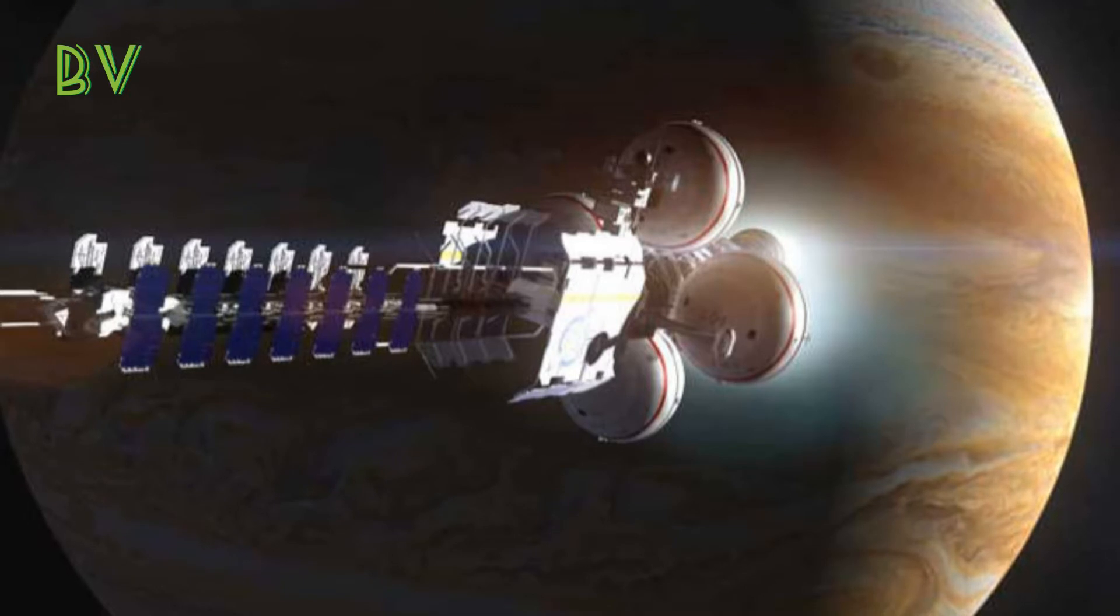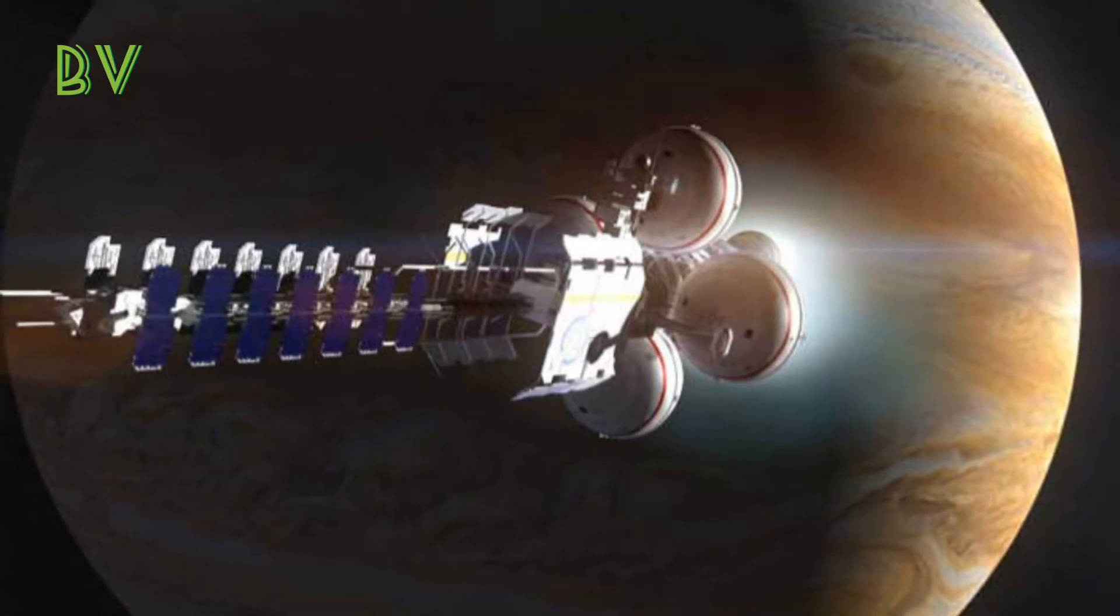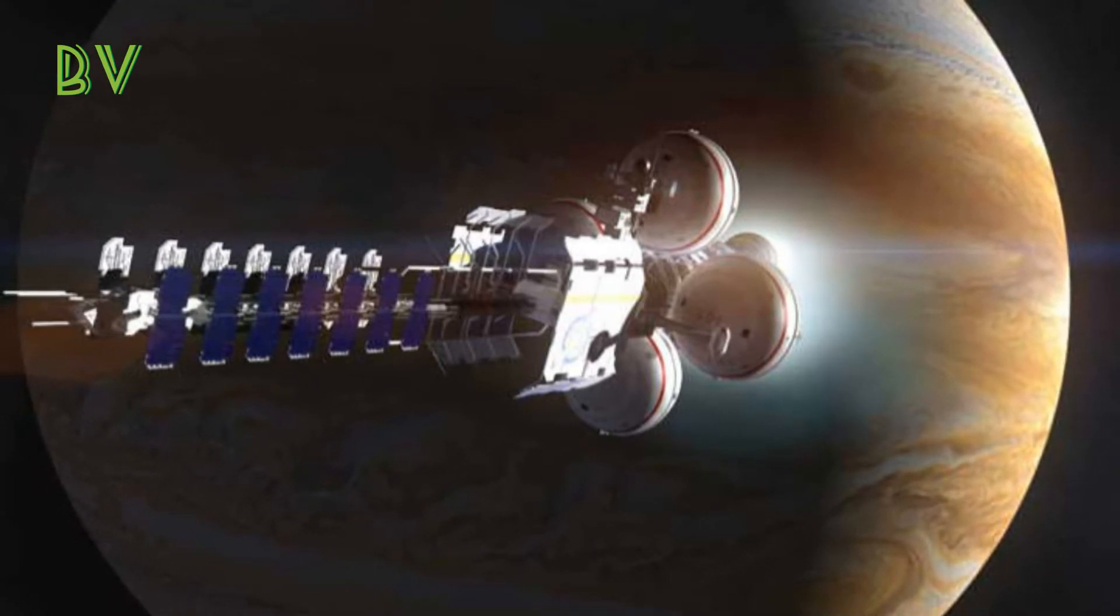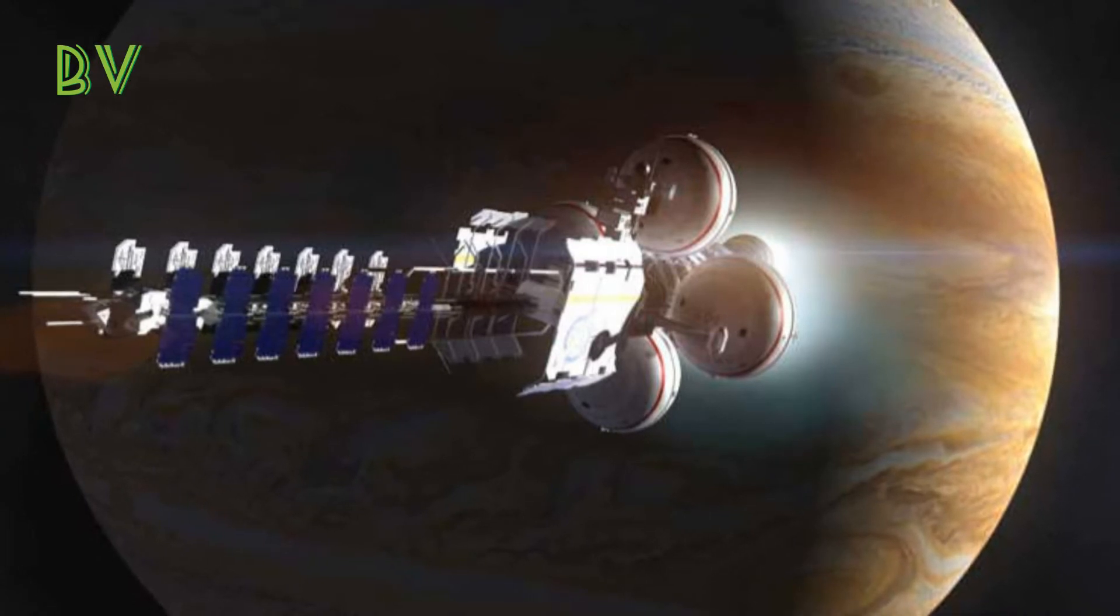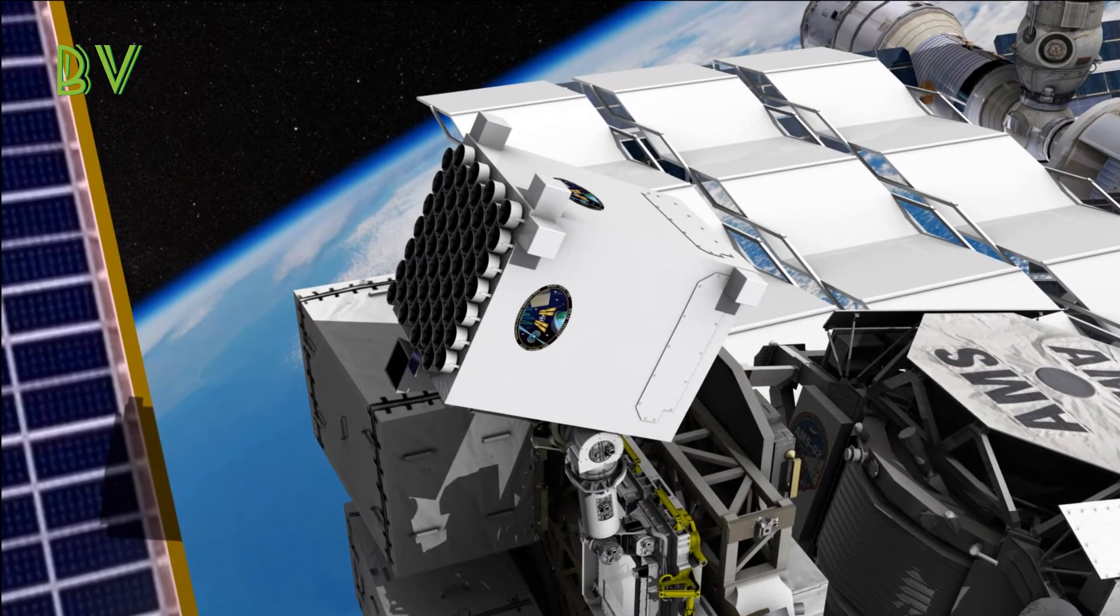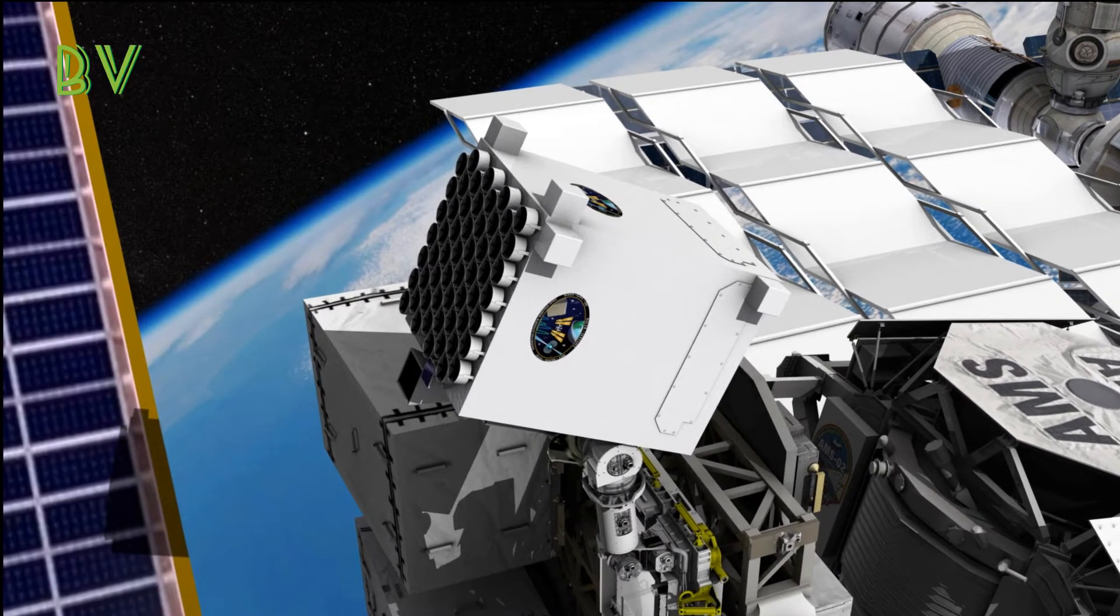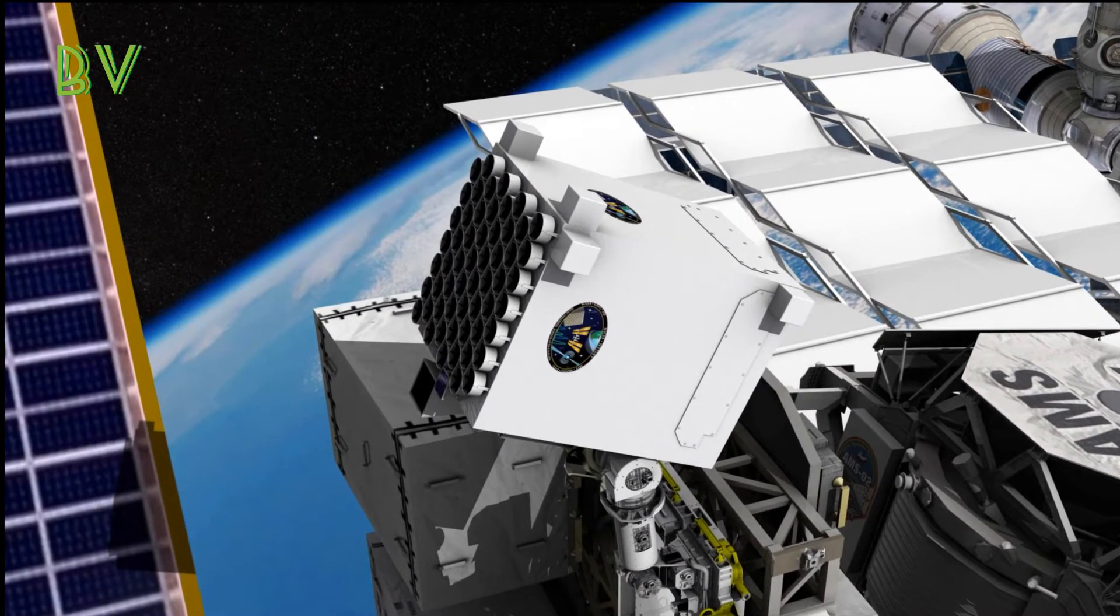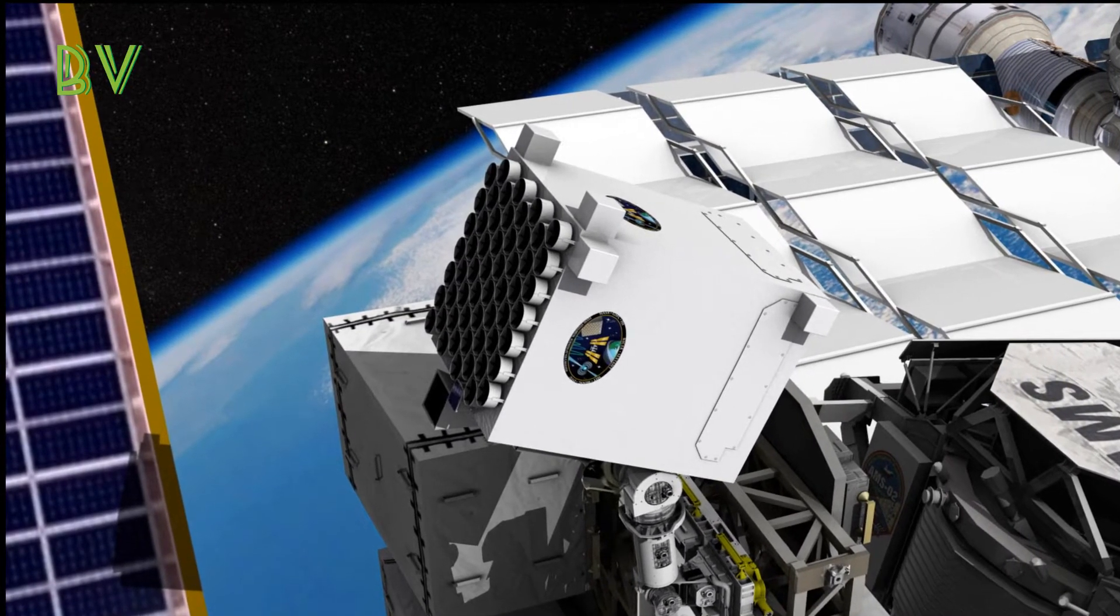NASA's New Horizons spacecraft, the fastest mission ever launched, took 10 years to reach Pluto. Like most spacecraft, New Horizons used the Deep Space Network, a set of telescopes spanning the globe to calculate the probe's distance from Earth. But a signal took 4.5 hours to reach Pluto and another 4.5 hours to be sent back. Any course calibrations the spacecraft made required waiting for the signal to arrive from Earth.